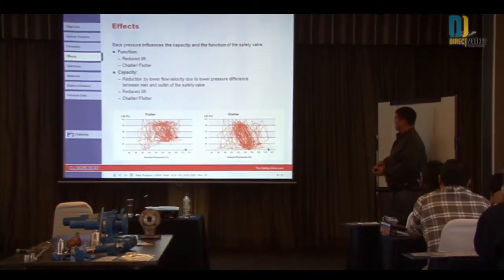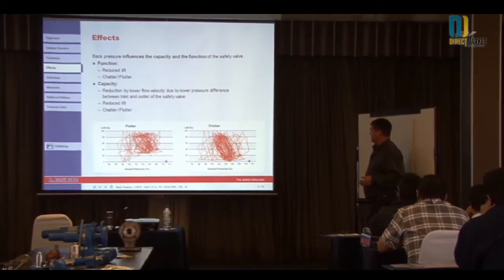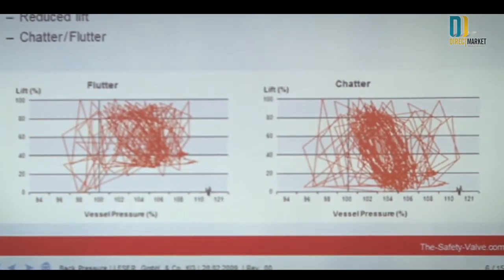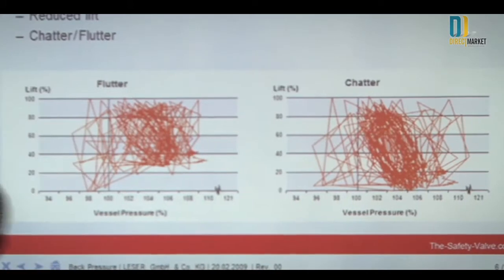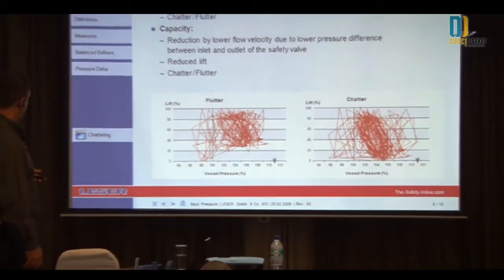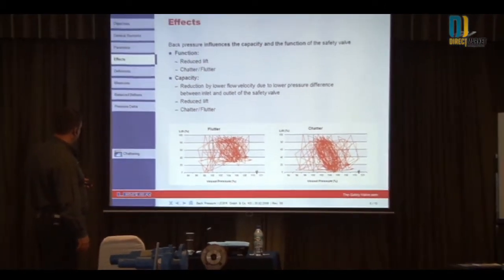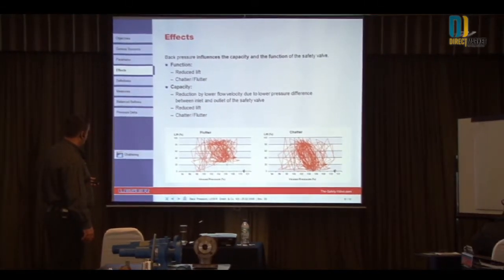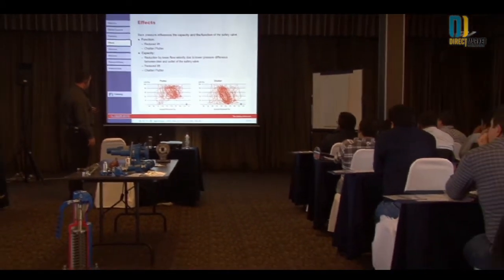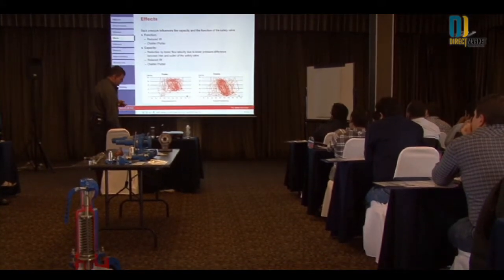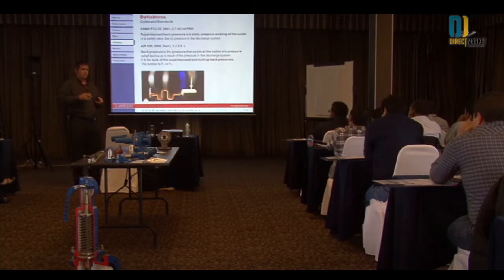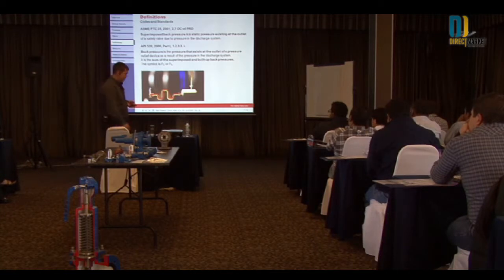Some of the characteristics influenced by back pressure: it would make the valve flutter or chatter, reducing the lift of the valve. It also reduces capacity through lower flow velocity due to a lower pressure difference between inlet and outlet of the safety valve. When the valve chatters and flutters, it will beat and ruin the components of the valve, requiring removal and maintenance.